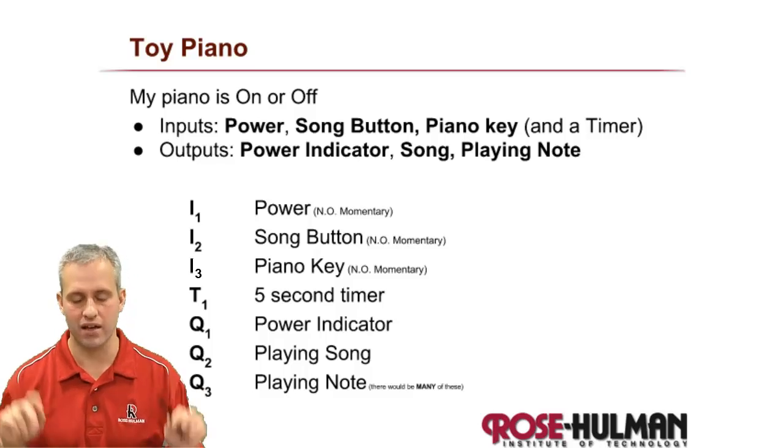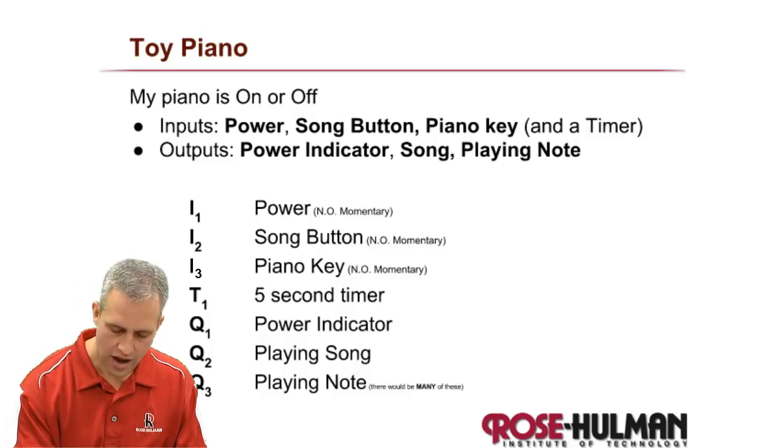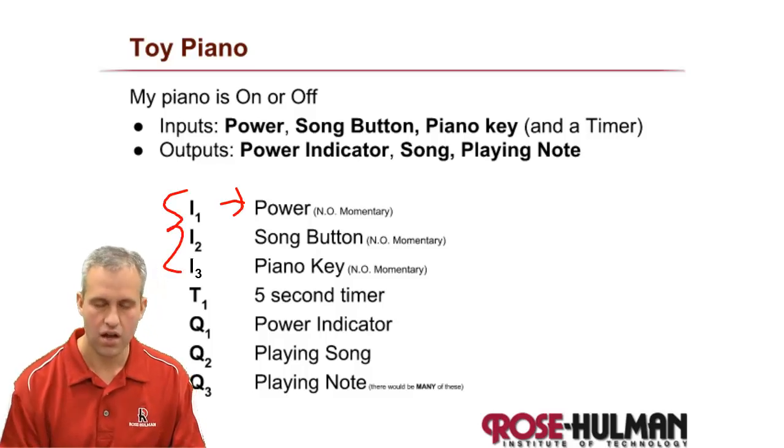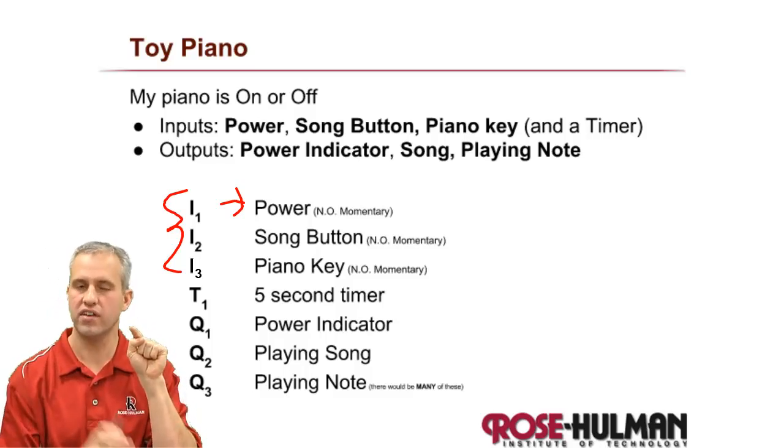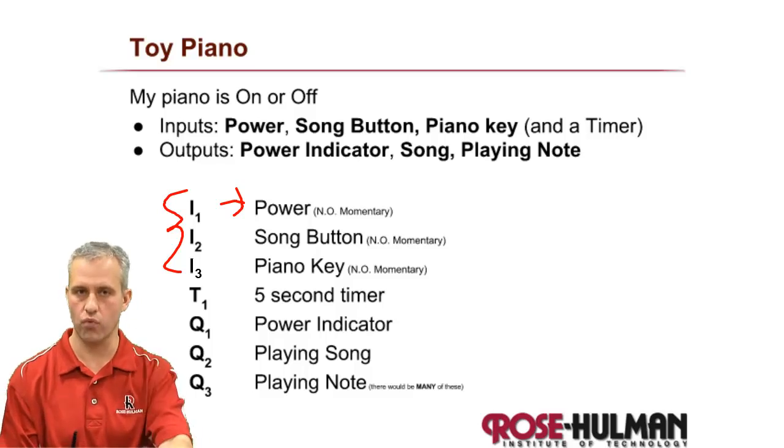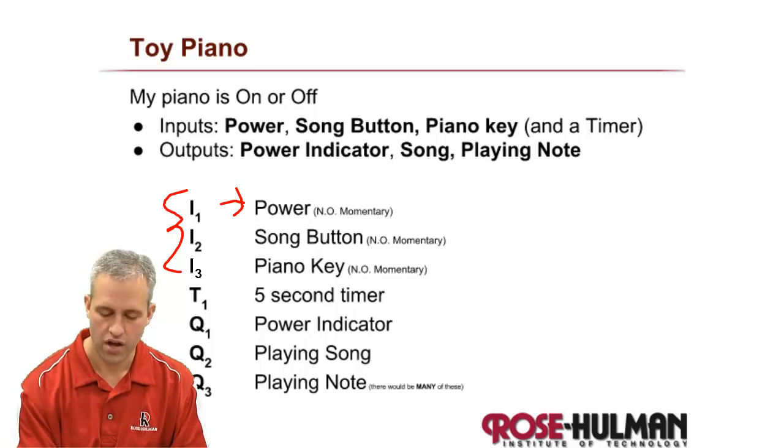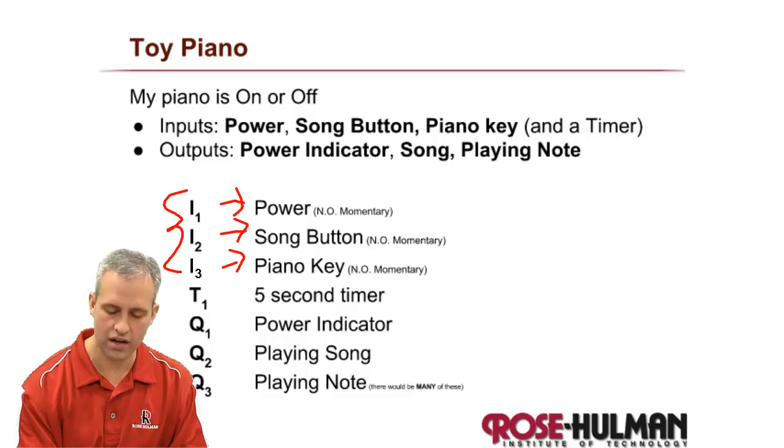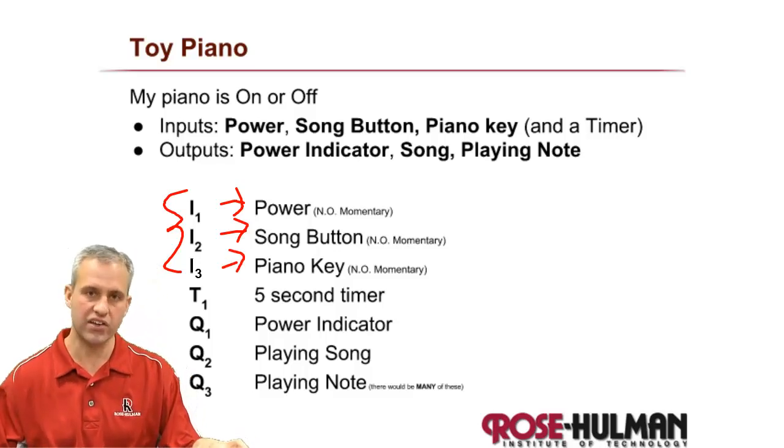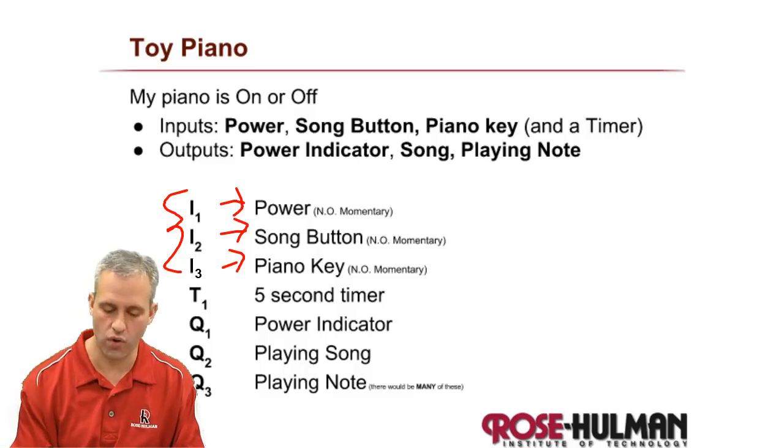The toy piano that we're going to mimic has three inputs: i1, i2, and i3. The inputs are the power button—you press it, it turns on, you press it again it turns off, it's actually trickier than it sounds. It's just a button, and it's going to be the power for on and off. You have another button for playing a song, and then you would have, you know, 88 keys. So instead of having 88 keys, we're going to make one key because if you can make one, then you can make 88.